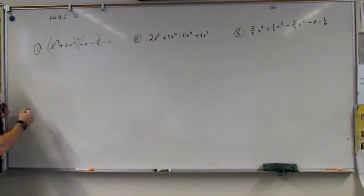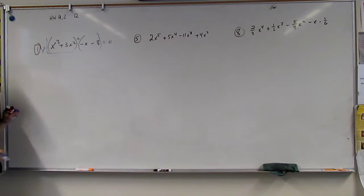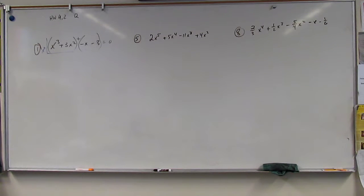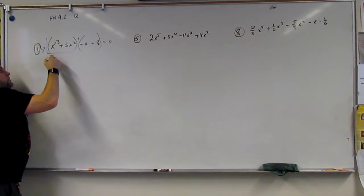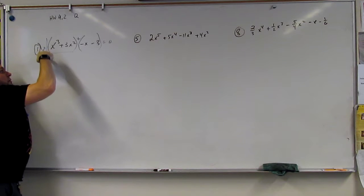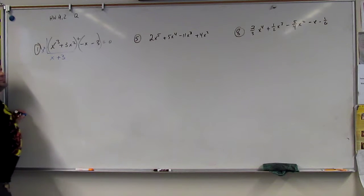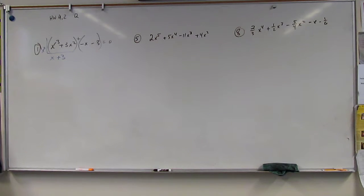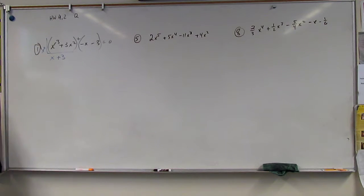And so then I'm going to do upside-down division. What's in common both of these? And it's an X squared. And X squared times what is X cubed? X. And X squared times what is 3X squared? 3. Yes.